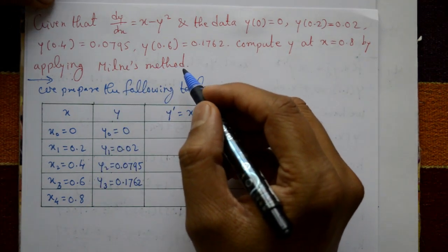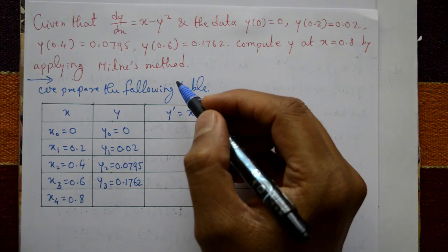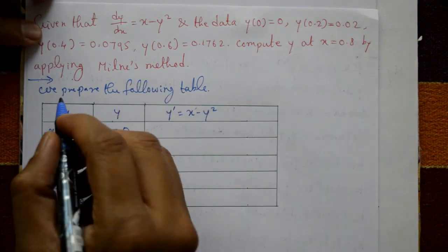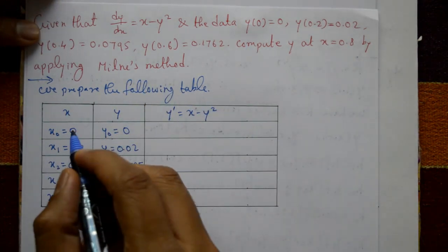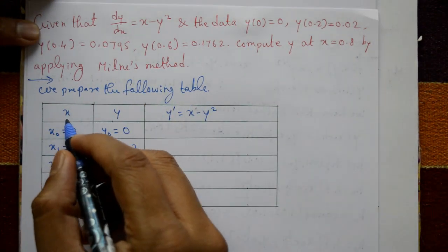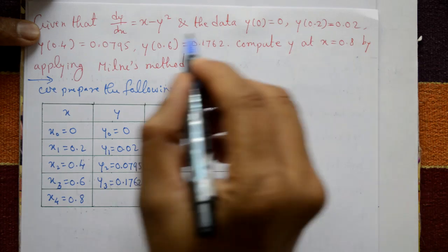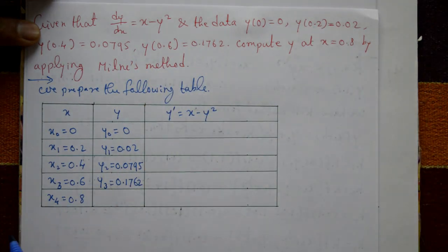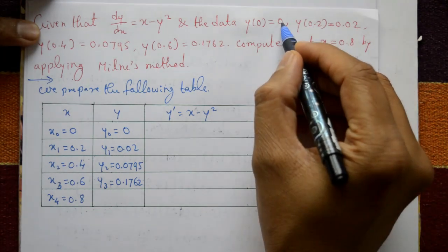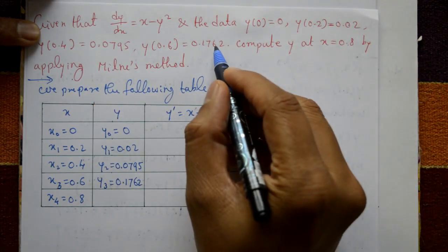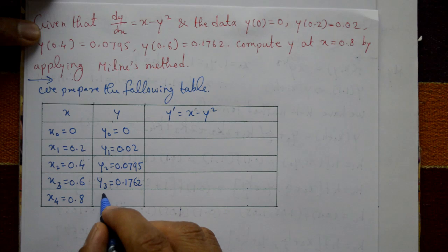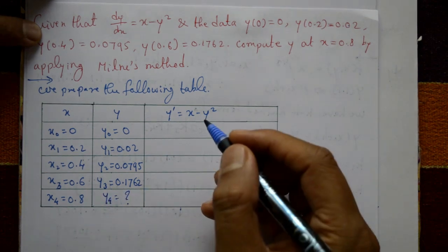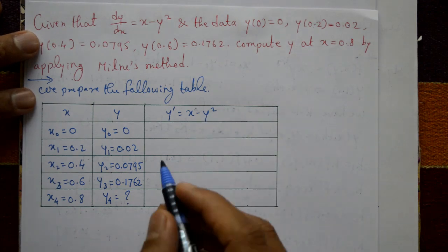In Milne's method there are two formulas: one is the predictor formula, and the second one is the corrector formula. First, we prepare the following table with x values x0, x1, x2, x3, x4, and corresponding y values y0, y1, y2, y3. We need to find y4.